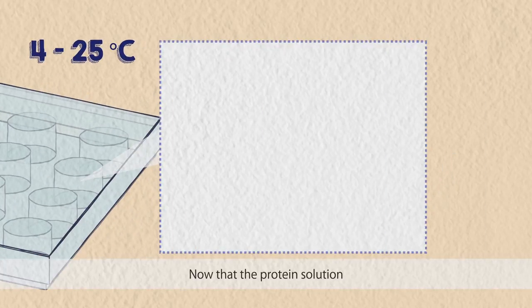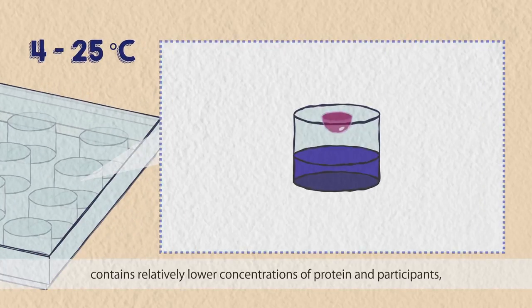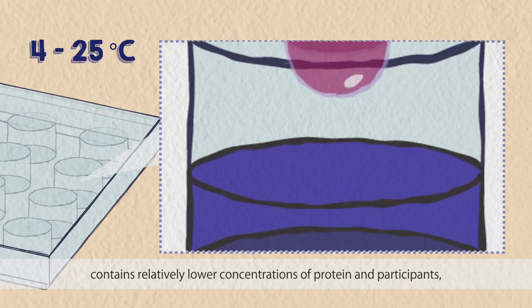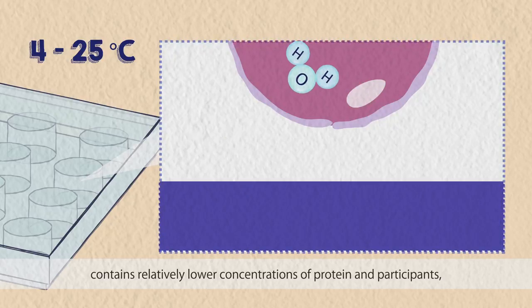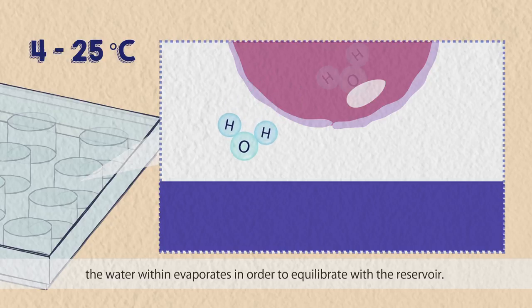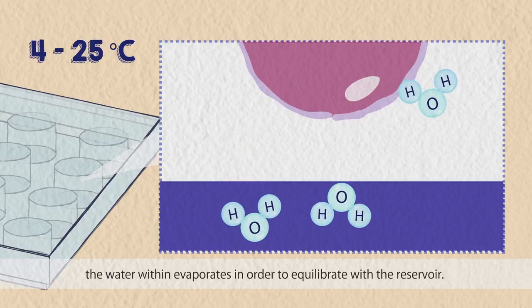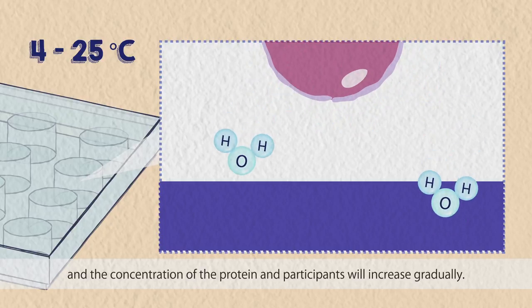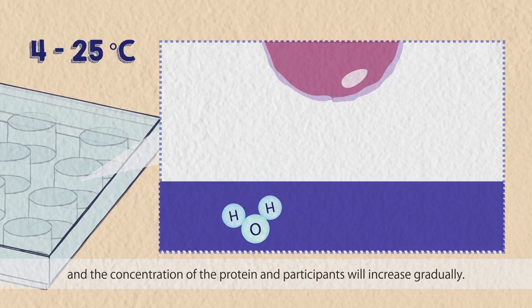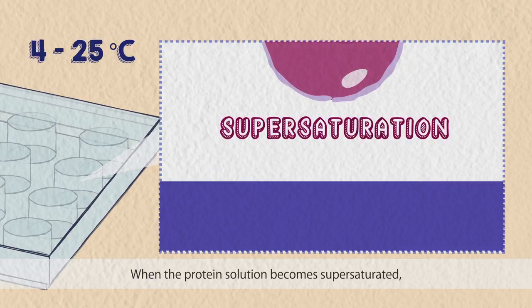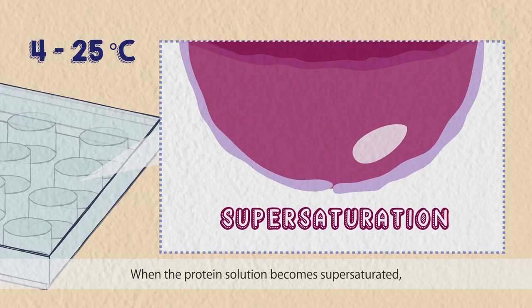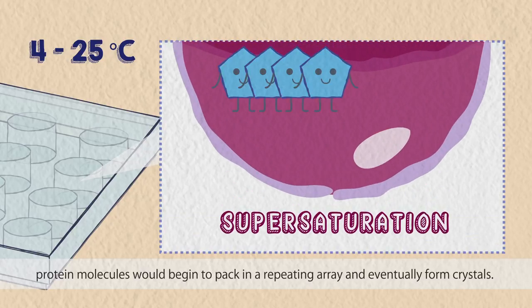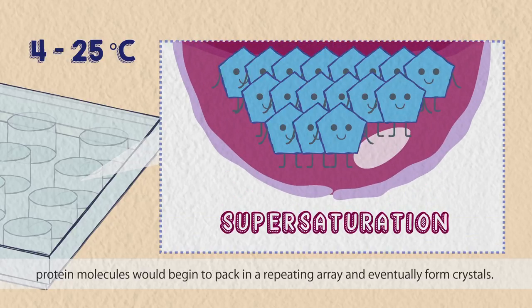Now that the protein solution contains relatively lower concentrations of protein and precipitants, the water within evaporates in order to equilibrate with the reservoir. Water from the protein solution will end up in the reservoir and the concentration of protein and precipitants will increase gradually. When the protein solution becomes supersaturated, protein molecules will begin to pack in a repeating array and eventually form crystals.